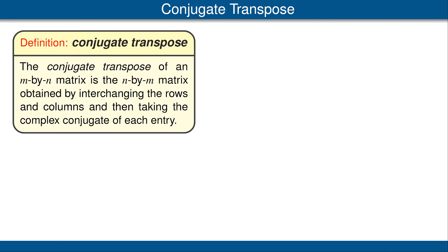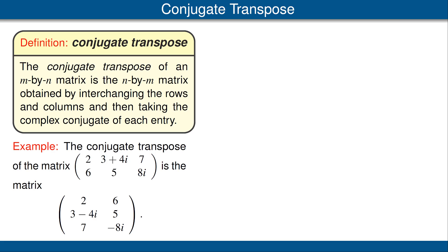The conjugate transpose of a matrix is obtained by interchanging the rows and columns and then taking the complex conjugate of each entry. Let's look at an example. Here we have a matrix with two rows and three columns, so it's a 2 by 3 matrix. If we interchange the rows and the columns and then take the complex conjugate of each entry, we get the matrix with three rows and two columns shown below. I've now highlighted in red the first row of the original matrix. We make that first row into the first column of the conjugate transpose and take the complex conjugate of each entry. The first and last entries, 2 and 7, are real, so they're equal to their complex conjugate. But the entry originally 3 plus 4i becomes 3 minus 4i.